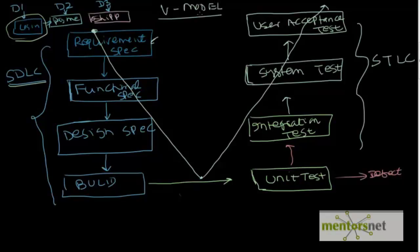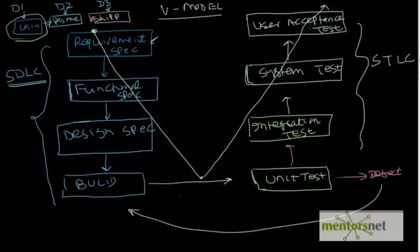In the V model, development and testing run side by side. Testing brings out defects and feeds them back to development so we can fix those things and move through the pipeline. Once we are done with the system test, we give it to the user for acceptance testing, and once that is done we are finished. I hope this diagram gives you a fairly good understanding of what kinds of testing you need to do and at what time. Thank you.